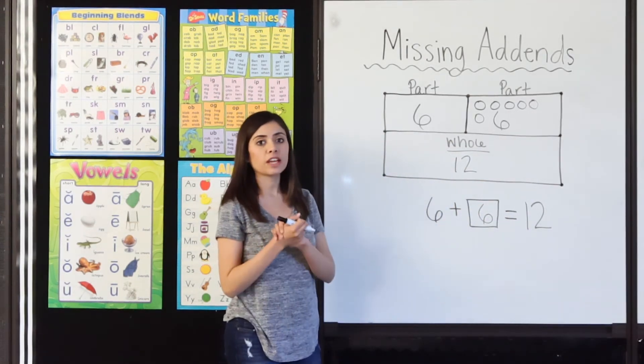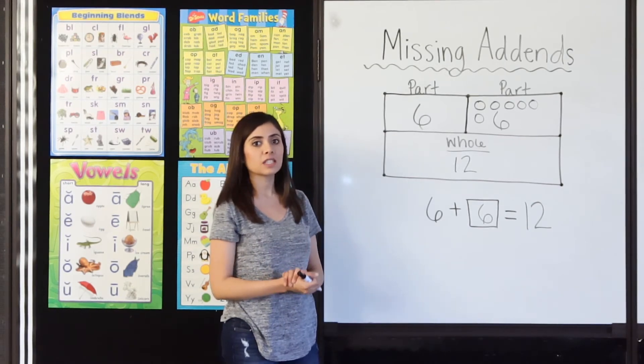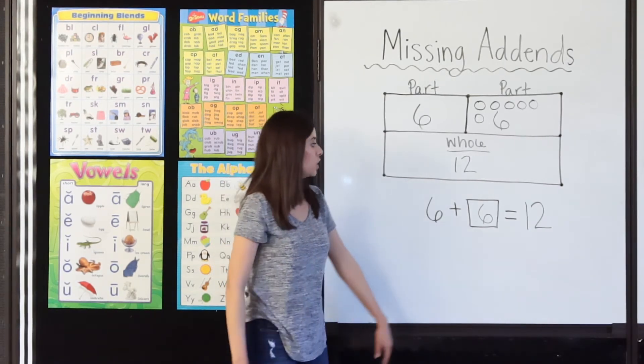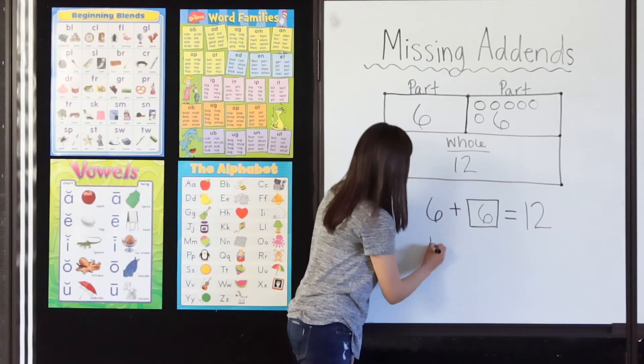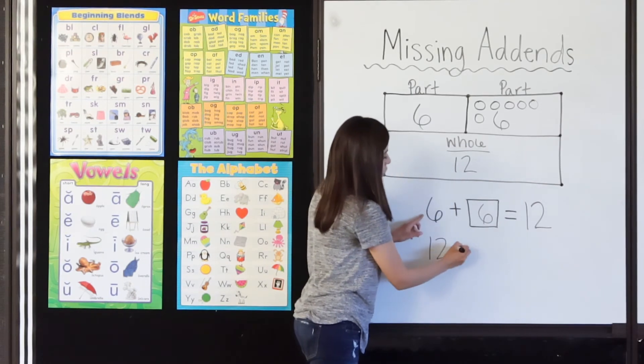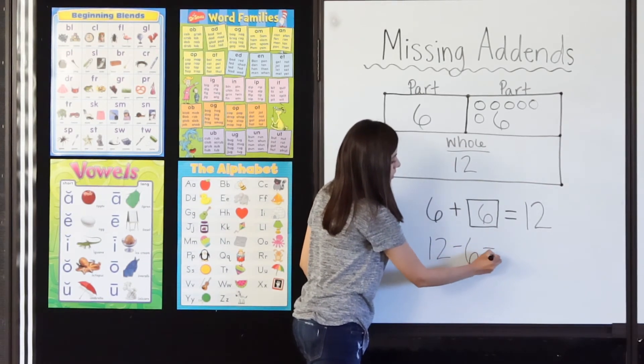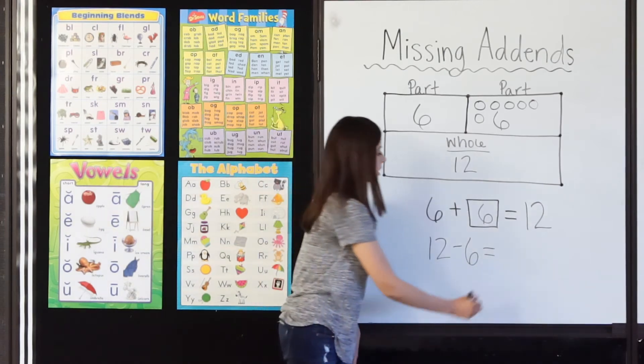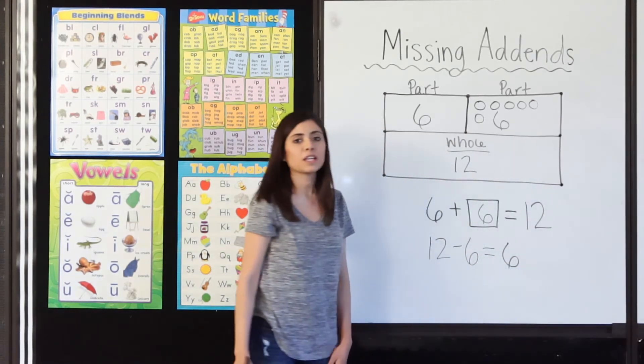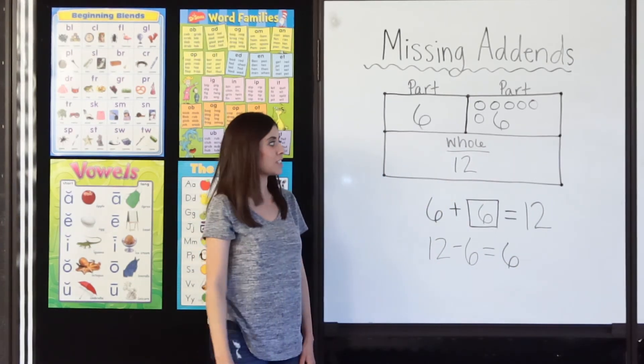Again, don't forget that you could have used related facts to help you find the missing addend. You could have taken 12 and subtracted 6. You would have gotten 6.